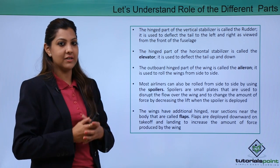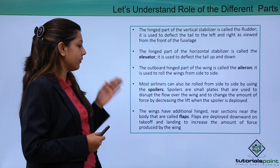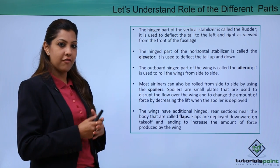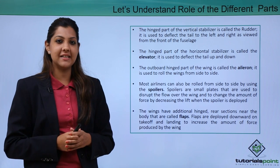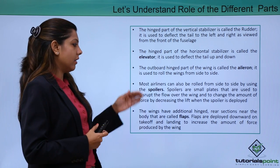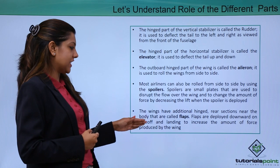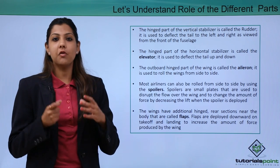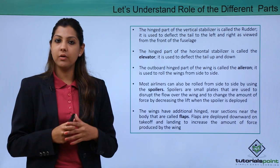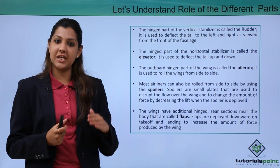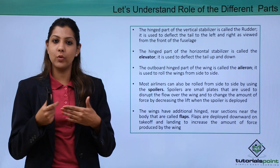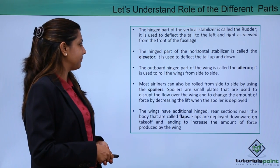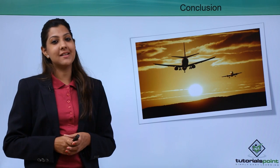The wings have additional rear sections near the body known as flaps. Flaps are deployed downward on takeoff and landing to increase the amount of force produced by the wing. Both wings have flaps, and when taking off or landing, the flaps extend to provide additional thrust and lift to the aircraft.